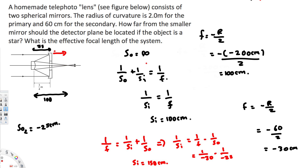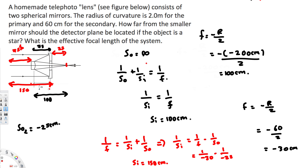SI equals 150 centimeters, and it's positive, which means the image is real. A real image forms on the front side — after the mirror. So the final image forms 150 centimeters from the secondary mirror. The secondary mirror is 75 centimeters from the primary mirror, and the image is 150 centimeters beyond the secondary, so it's 75 centimeters from the primary mirror on the other side.